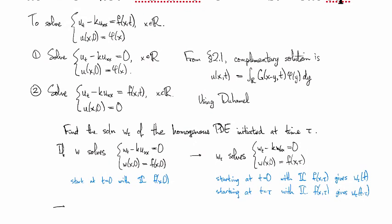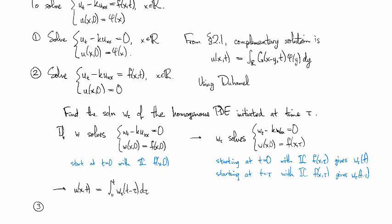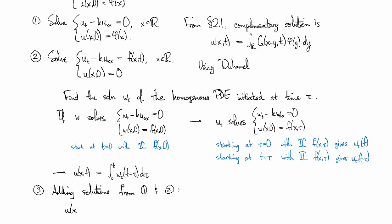So, then by Duhamel's principle, the solution is going to be the collection of all of these added together. Okay, so then the last step is to add these together. So, adding solutions from 1 and 2 together, we see that the general form for u is... So, we've got the complementary solutions. So, this is the convolution of the heat kernel with our initial condition.